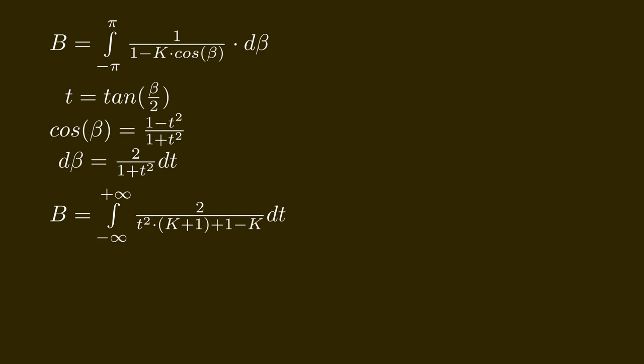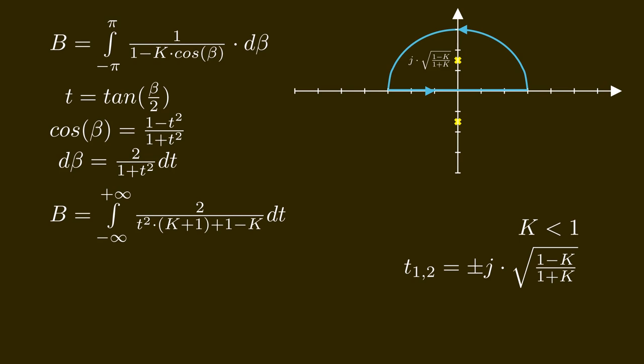In the denominator we have a quadratic equation in t. If we assume that K is smaller than 1 then we have 2 purely imaginary poles at that location. The location depends on K but is always on the imaginary axis. One convenient trick for solving such integrals is via the residuals in the complex plane. For well behaved functions the integral over any closed loop in the complex plane is always the value of the enclosed poles times a factor of 2πj.